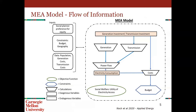I don't have time to go through all the constraints, but this is a flow of information diagram — the endogenous variables are highlighted in those orange boxes. The ME model takes inputs as the social planner's preference for equality, budget constraints, geography, population, generation costs, and transmission costs for the different countries. It will decide where to invest in power plants and transmission lines, which feeds into a power flow evaluation, and that will determine electricity consumption around the country. This runs up to the budget constraint, and all of these variables feed into our social welfare function — the utility that the stakeholder gets from increasing electricity access in the country.